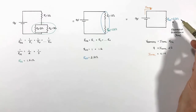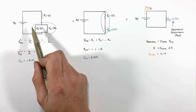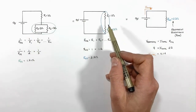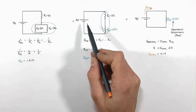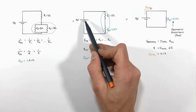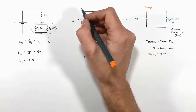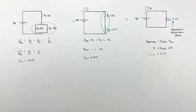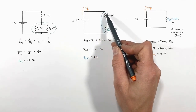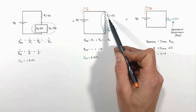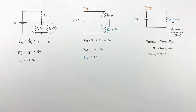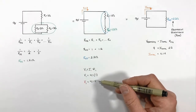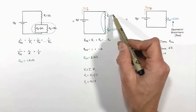Now that we know the equivalent resistance and the total current, we can start to work our way backwards through these circuits to determine how much voltage and current there is through each individual resistor. The total current coming out of the battery is 4.1 amps, so these 4.1 amps are going to travel along the wire and through resistor R1. Using Ohm's law, we find there's 4.1 volts used up as the charge passes through this 1 ohm resistor.